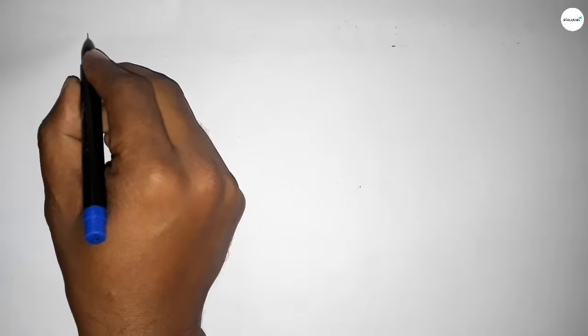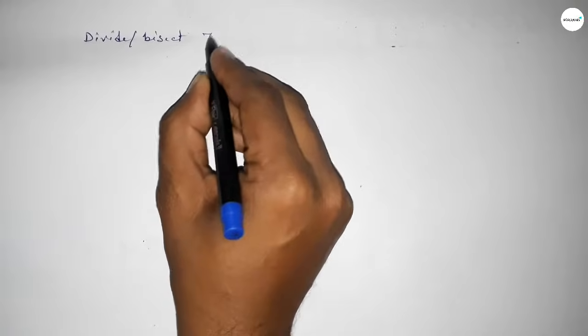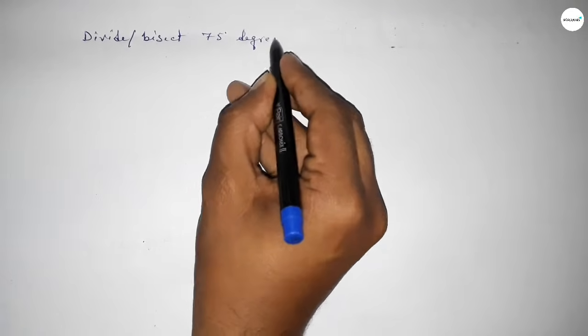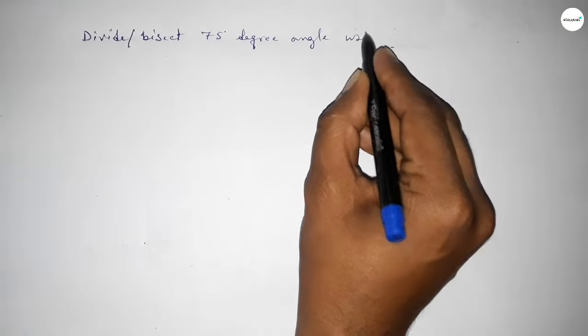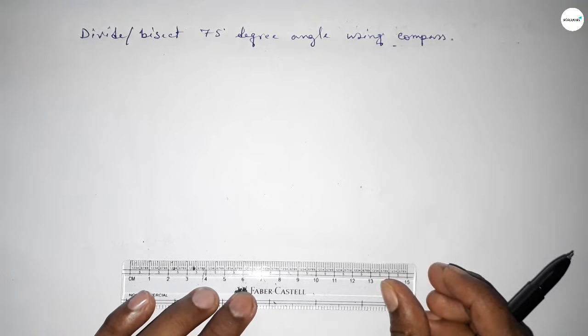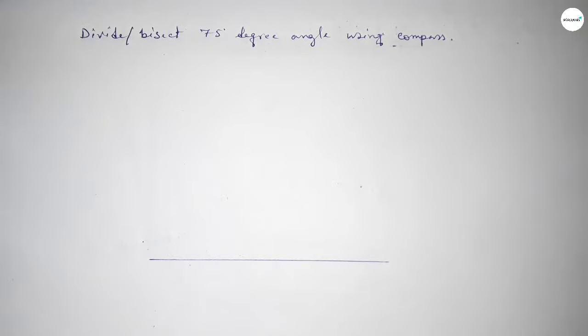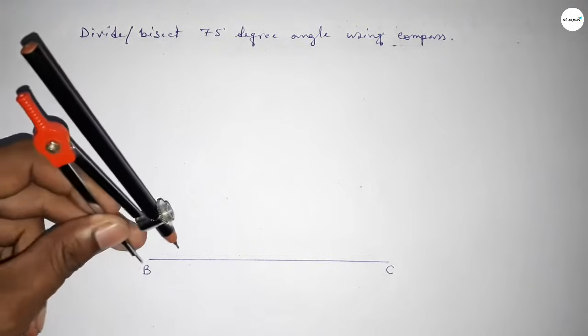Hi everyone, welcome to SI Share Classes. Today in this video we have to divide or bisect a 75 degree angle by using compass. So let's start the video. First of all, we have to draw here a straight line of any length and taking here point B and here C.